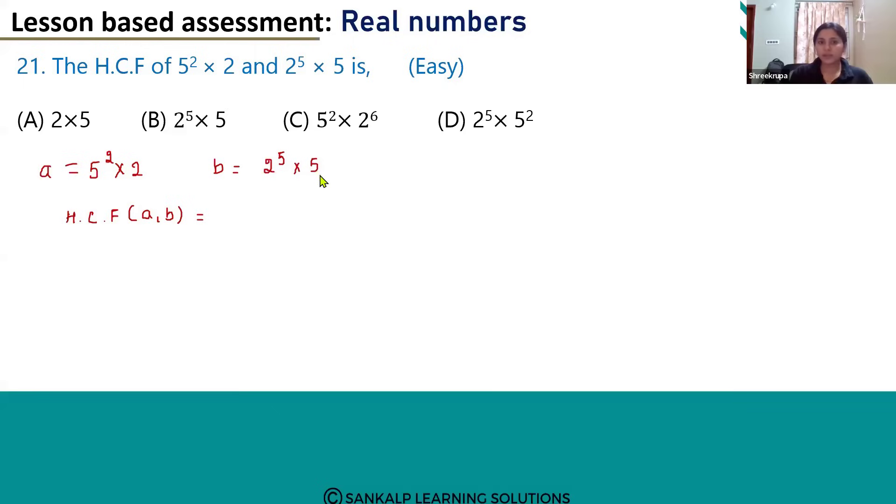So we have to take the product of the least powers of the common numbers. The HCF of a and b will be 2¹ × 5¹.